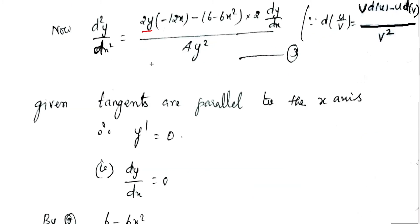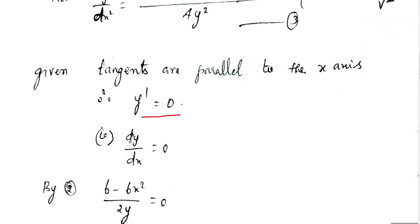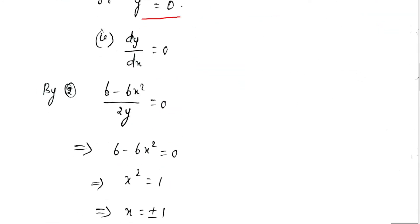We can now apply the condition at this point. Since the tangent lines are parallel to the x-axis, the slope is 0, meaning dy/dx = 0. So we set dy/dx = (6 - 6x²) / (2y) equal to 0.